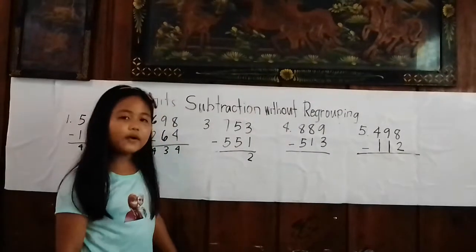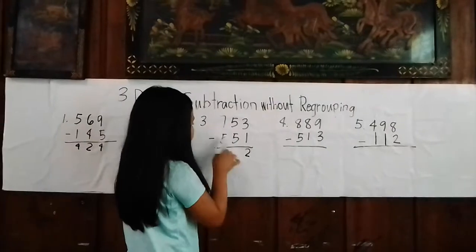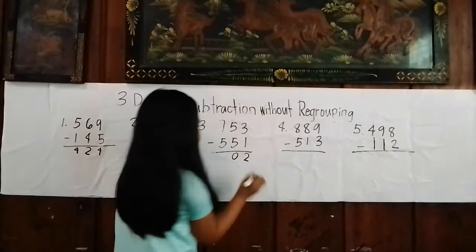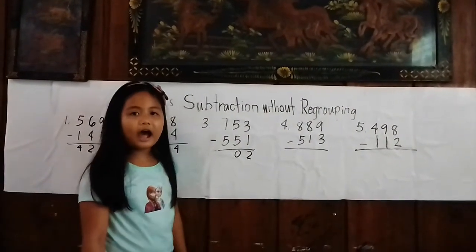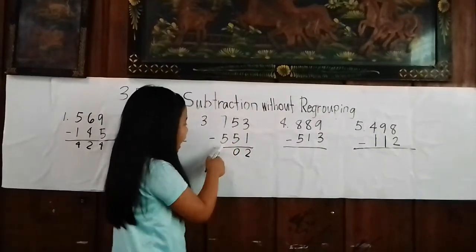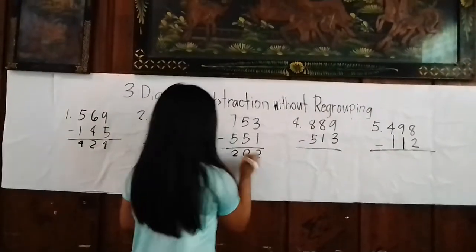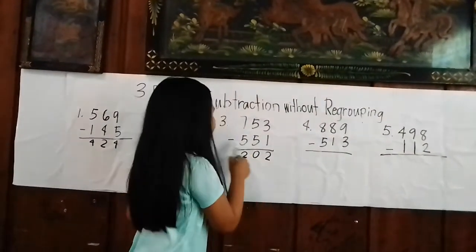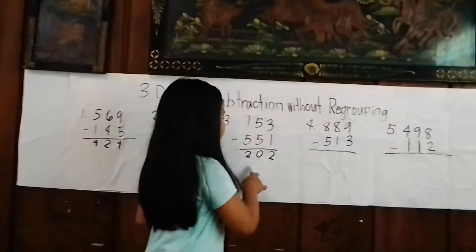Now we will subtract the tens place. 5 minus 5 equals 0. Now we will subtract the hundreds. 7 minus 3 equals 2. So the answer of 753 minus 351 equals 202.